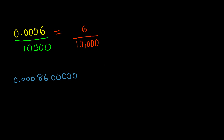This might seem like a humongous number, but it's actually not. If you take a look, we have zeros in front of the 86. The reason zeros matter is because in some cases a zero does not have any value. But if zeros come before the significant digits — in this case between the decimal point and 86 — those zeros actually matter.